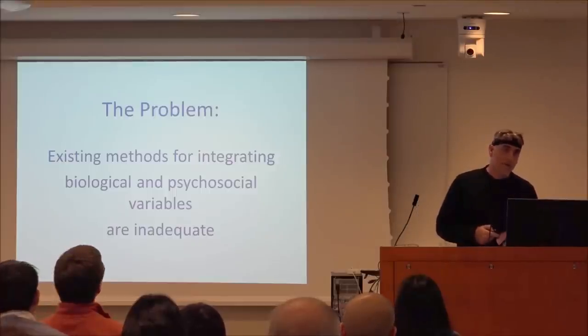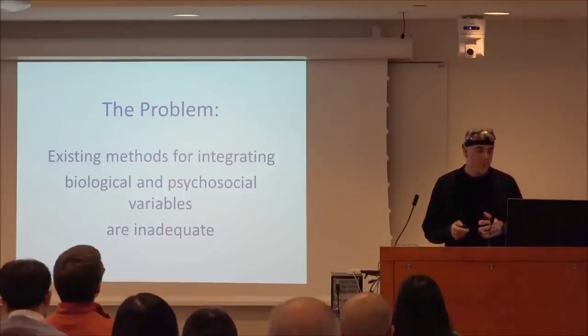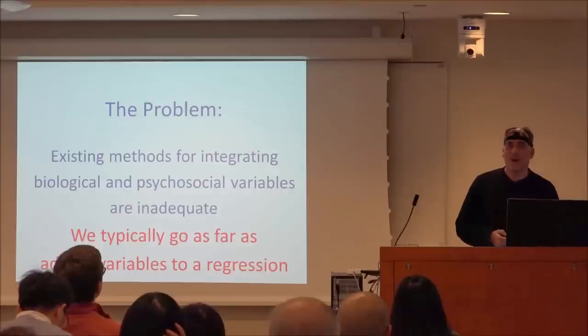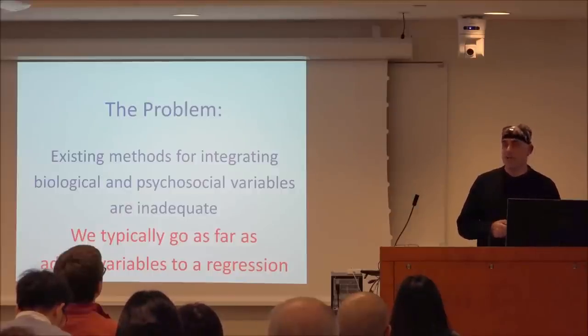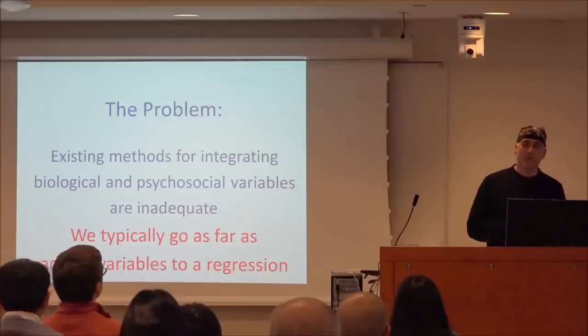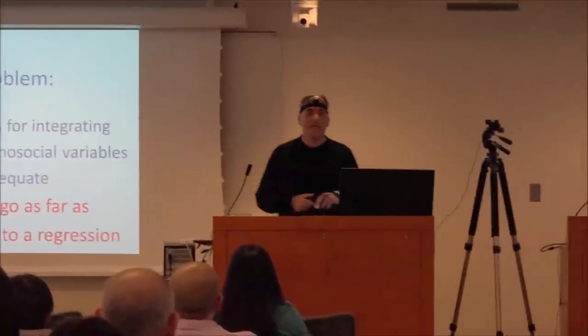As I started working with integrating biological and social science data, I noticed that we typically don't go far enough — we just add a variable to our regression equation. If you're a biologist you'll add gender or an SES variable; if you're a social scientist you'll add a dependent variable from a magnet, EEG, skin response, or biomarker data and then add that to your regression equation. That's gotten us some of the way there, but we need to go much further than just adding variables to the regression equation.